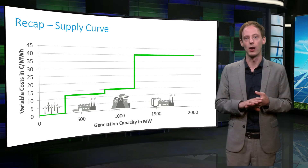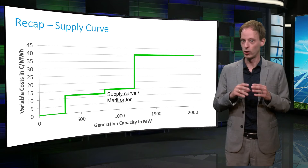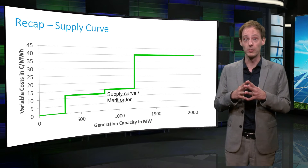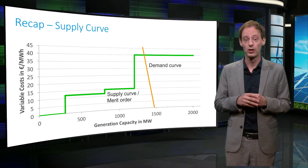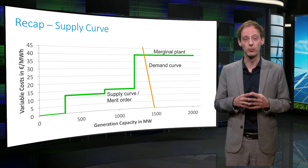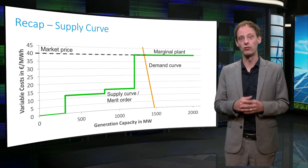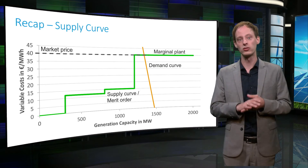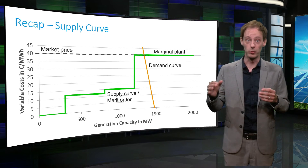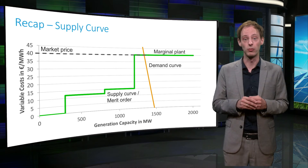Let's recap some market basics. We call the last plant needed to satisfy demand the marginal plant, and that is the one that sets the market price. Every plant that runs receives that market price, and that means the other plants that run make an operating profit.